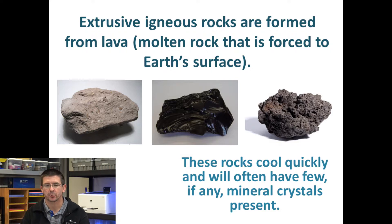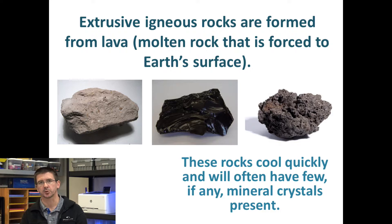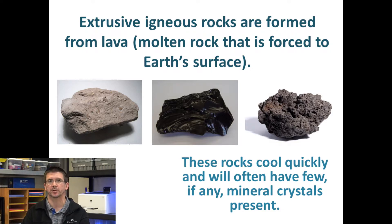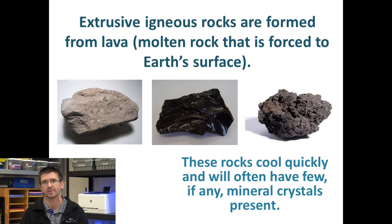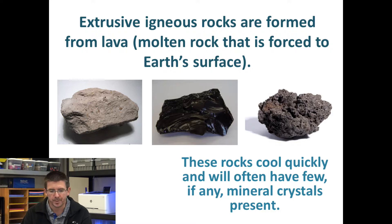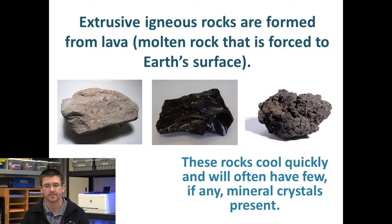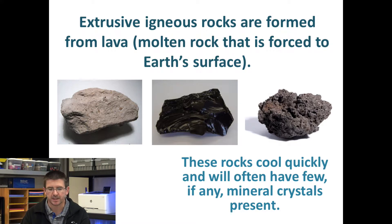Extrusive igneous rocks, on the other hand, are formed from lava. Lava is just magma, or molten rock, that reaches Earth's surface. Once it bursts out through a volcanic eruption or some sort of fissure in Earth's surface, it actually changes from magma to lava — it's still molten rock, we just use different terminology for it. Because extrusive igneous rocks are on Earth's surface where the temperature is cooler, they are able to cool and harden more quickly. As a result, they'll often be smoother, with fewer mineral crystals present.